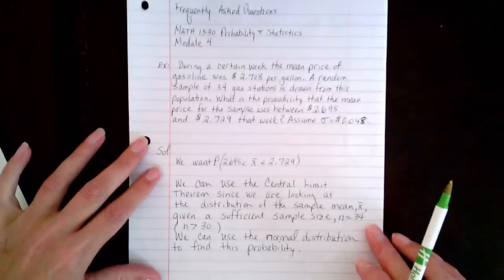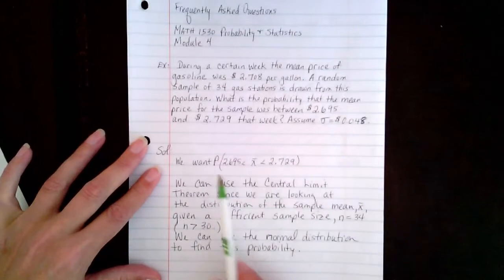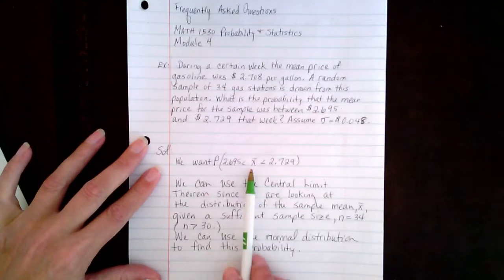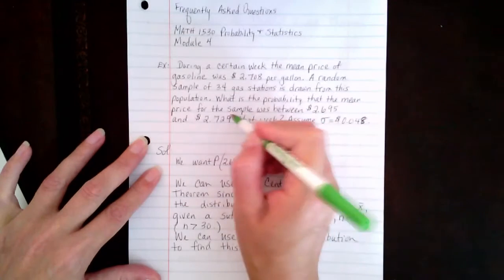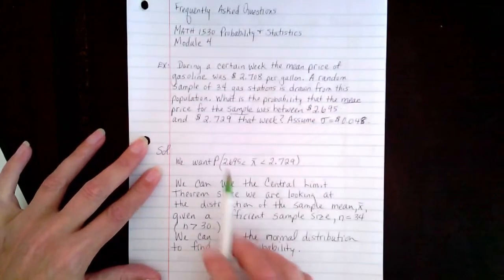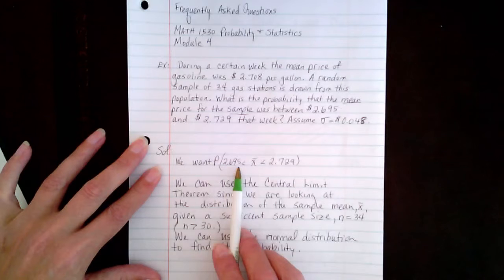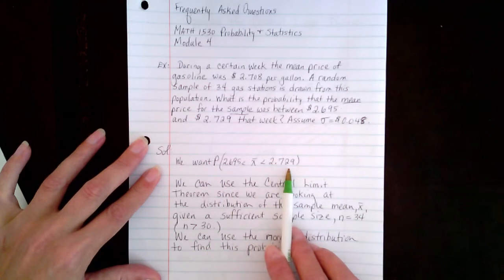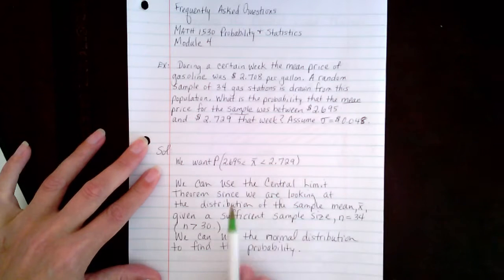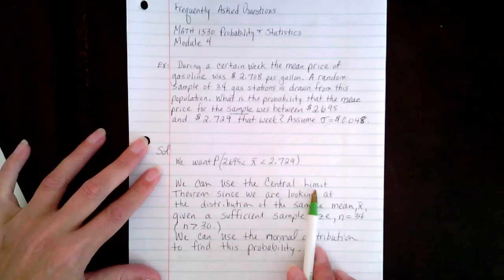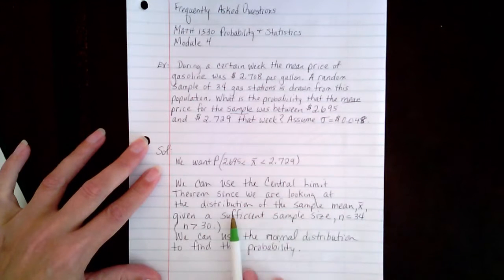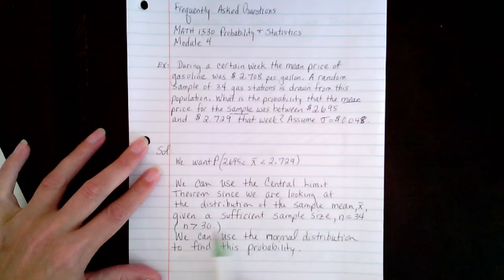Here's the solution. We want to find the probability that the sample mean is between 2.695 and 2.729. We can use the Central Limit Theorem since we're looking at the distribution of the sample mean and we have a sufficient sample size.